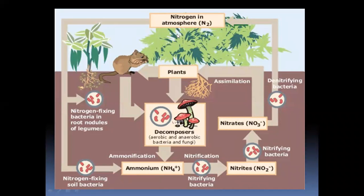Atmospheric nitrogen is an unavailable resource. It is a major part of nitrogen — present in proteins and pigments in your body — but it is unavailable in the form of N₂. Biological fixation converts this nitrogen gas in the atmosphere into usable compounds.